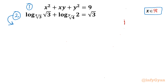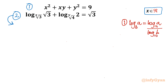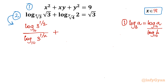The first log property is: log a base b can be written as log a base 10 divided by log b base 10 — the change of base formula. Applying this here, I will write log root 3 (which is 3 to the power half) with base 10, divided by log of the base which is 3 to the power 1 over x. Similarly for the second term, log 2 (written as 3 to the power half) with base 10 divided by log of 4 raised to the power 1 over y, equal to root 3 on the right-hand side.